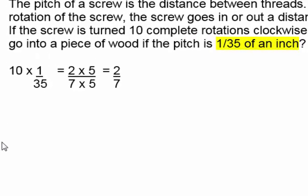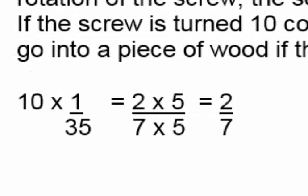So the setup is ten times one-thirty-fifth. I showed the factorization of the numerator and the denominator, showing that you can cancel out the fives, and you're left with two-sevenths of an inch.